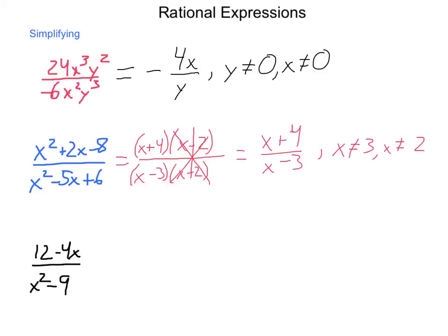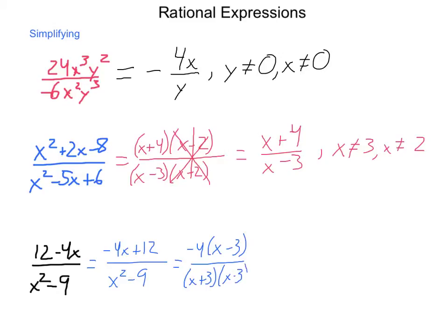Last one: 12 minus 4x divided by x squared minus 9. I'm going to go through and begin by changing my order in the numerator. I have negative 4x plus 12 divided by x squared minus 9. This becomes negative 4 times x minus 3 divided by x plus 3 times x minus 3. I have an x minus 3 in both numerator and denominator, so I'm going to simplify that away to a value of 1, leaving me with negative 4 divided by x plus 3.